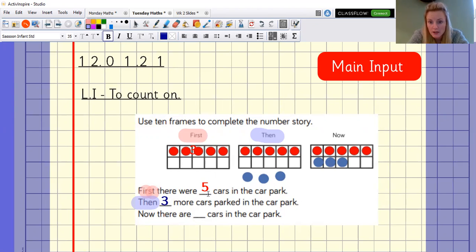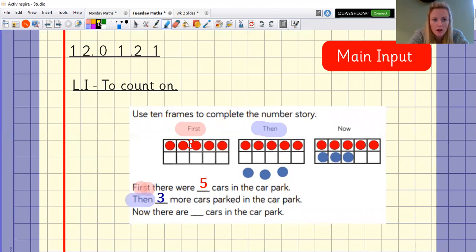Now. Do you see how it says now there? Let me highlight it again for you to get a different colour. Now. Now there are cars in the car park. So how many are in total? So we know five, six, seven, eight.